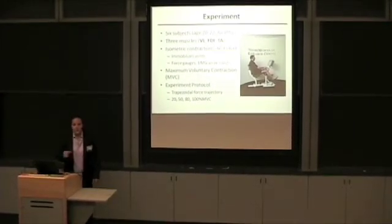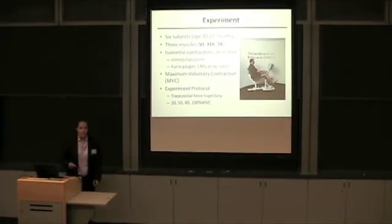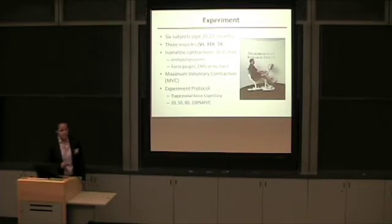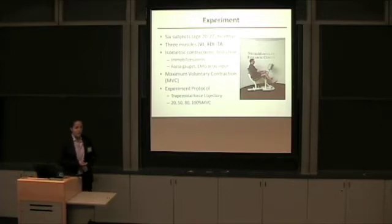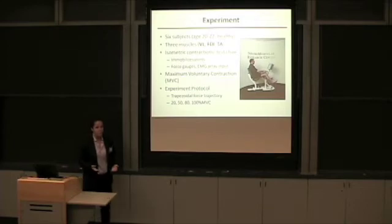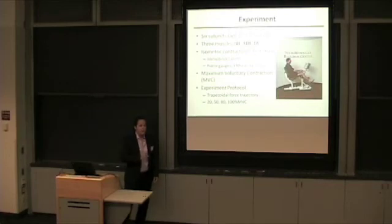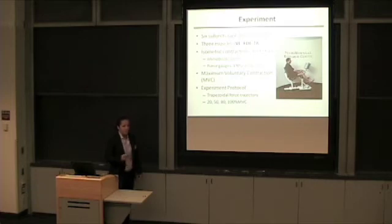I asked the subjects to perform isometric contractions of each of these three muscles using a test chair developed at the NRC, shown on the right. This chair immobilizes the joints necessary for the isometric contractions, records the subject's force output with respect to time, records and stores the EMG data for later decomposition, and provides live feedback to the subject as they perform. To normalize behavior between subjects, as everyone's capable of different force level outputs, we use something called the maximum voluntary contraction, or MVC. The MVC is the highest absolute force level that a subject can sustain with a given muscle for a very short period of time. And all subsequent contractions are measured as percentages with respect to this MVC.